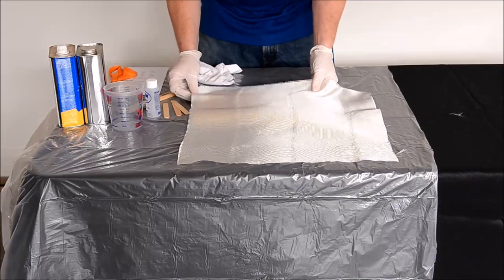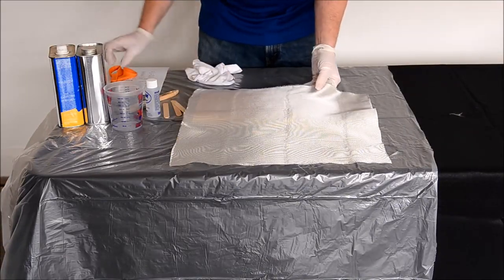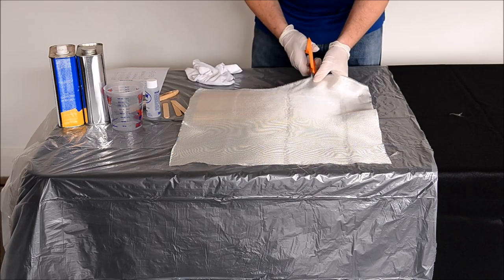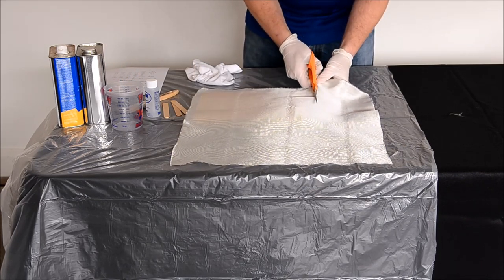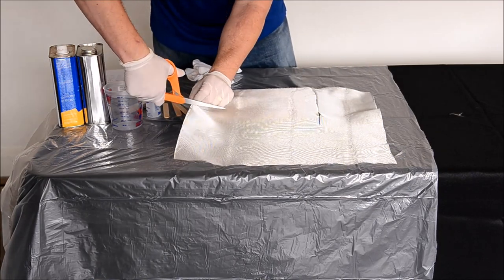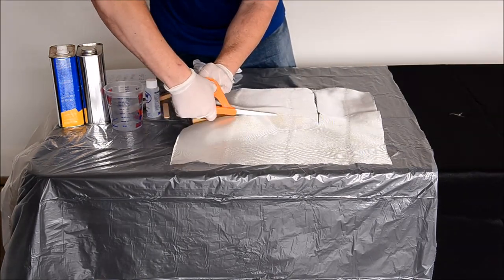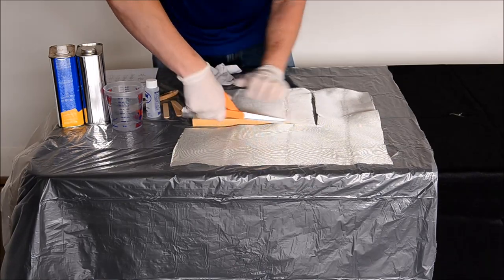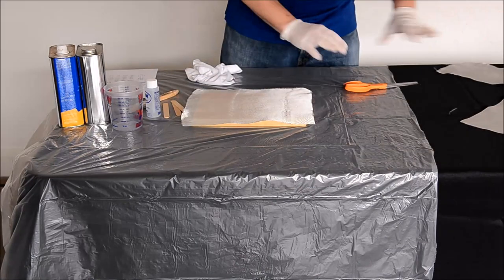Cut the fiberglass cloth so that it is a little bigger than the surface that is to be laminated. Some people will tell you to cut the fiberglass to the exact shape, but I prefer it to be a little bigger. This allows you to fully cover the area without worrying about distorting the fiberglass around the edges. As you see, there is a little excess on each edge.